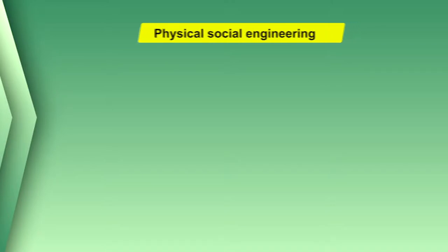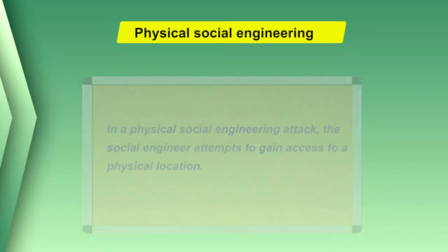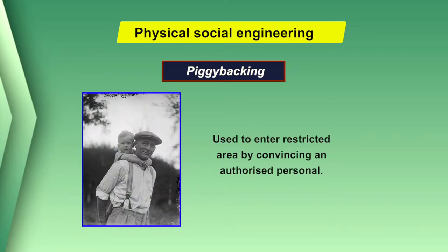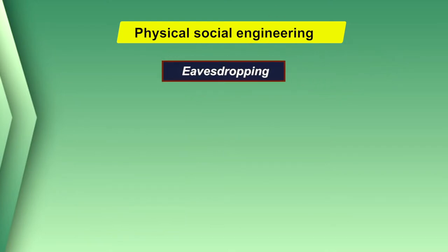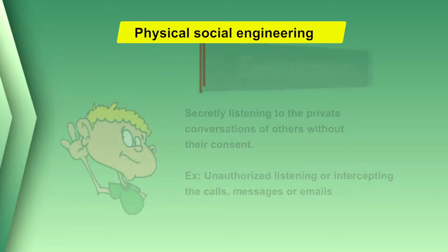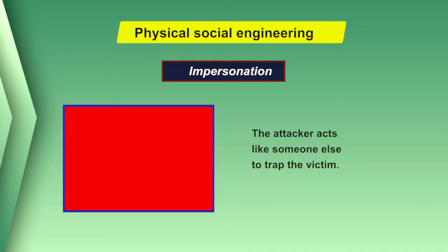Let us start with physical social engineering. In a physical social engineering attack, the social engineer attempts to gain access to a physical location. The attacker may do this via various methods. The first technique is piggybacking, used to enter a restricted area by convincing an authorized person. Second is eavesdropping — an attacker can gain information by hearing a discussion between two people, reading emails, or listening to telephonic conversations. Third is impersonation, where the attacker acts like someone else to trap the victim.